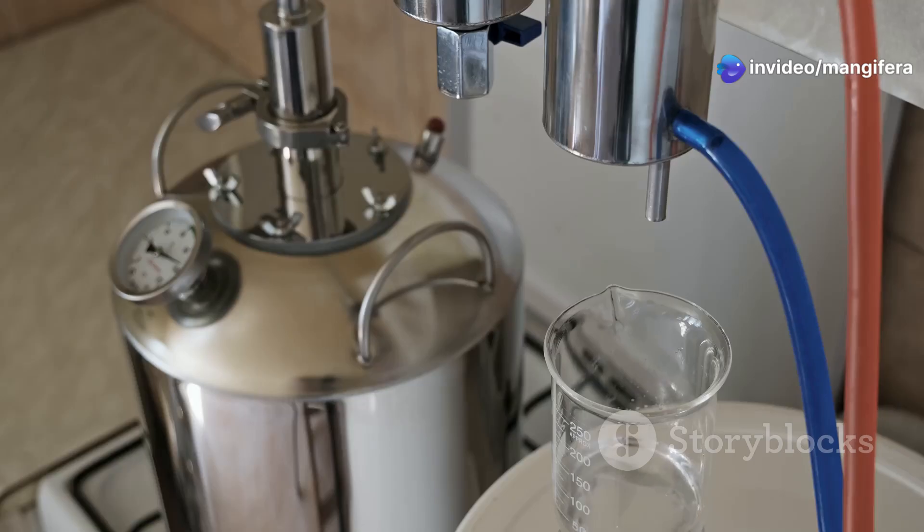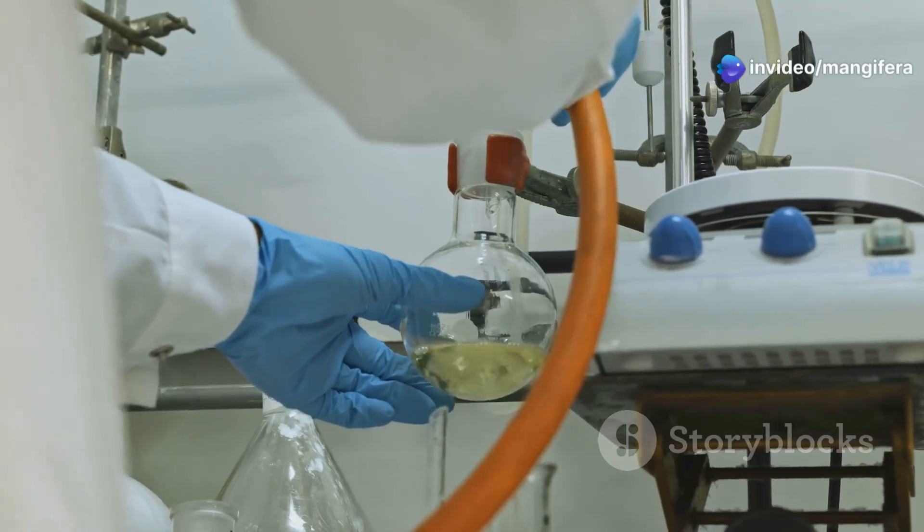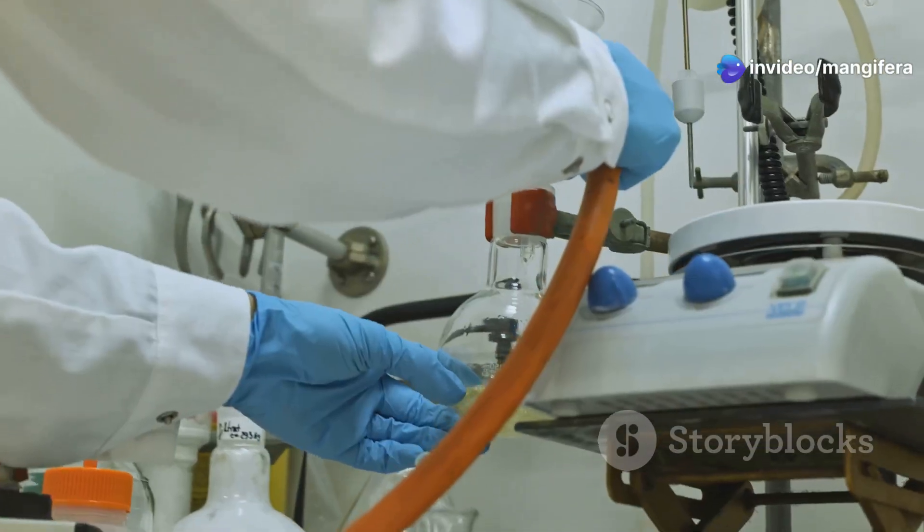So what exactly is azeotropic distillation? Simply put, it's a technique used to separate liquid mixtures that have an azeotrope, a mixture that boils at a constant temperature and maintains the same composition in both liquid and vapor phases. This means normal distillation doesn't work because the components can't be separated by boiling alone.